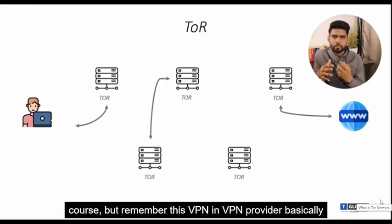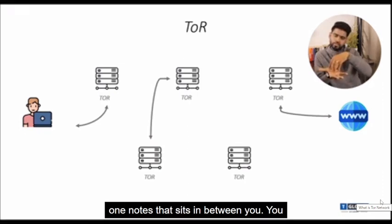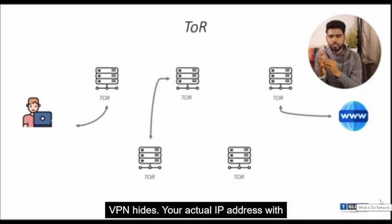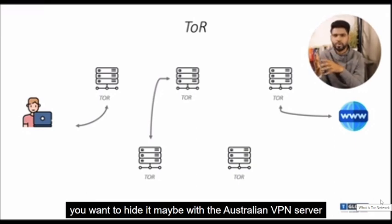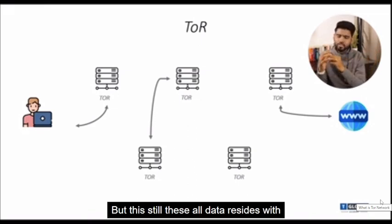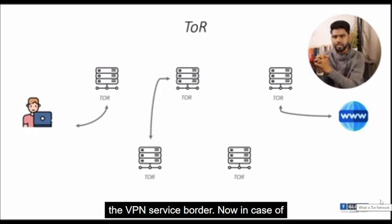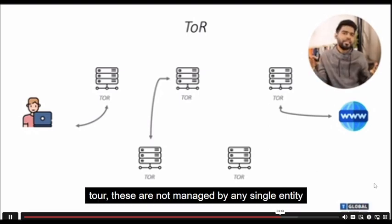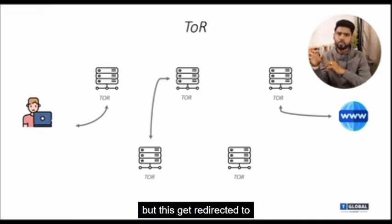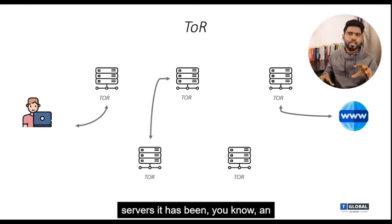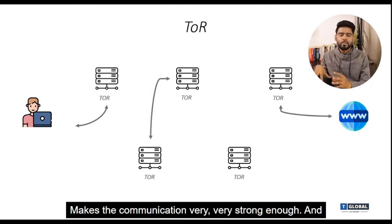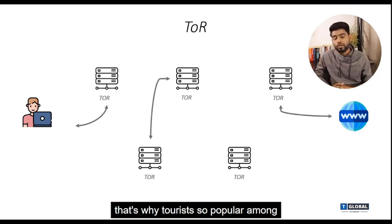You can use a VPN, but remember that VPN providers store your information. With a VPN, there is only one node sitting between you and the destination — the VPN hides your actual IP address with a random one, maybe an Australian or Singapore IP address. But all that data still resides with the VPN service provider. With Tor, the nodes are not managed by any single entity or organization, and traffic is redirected through multiple nodes so nobody knows the origin.